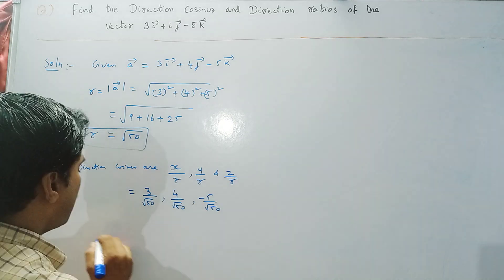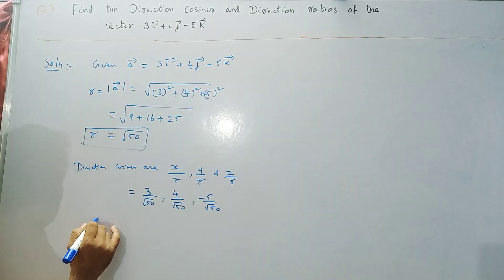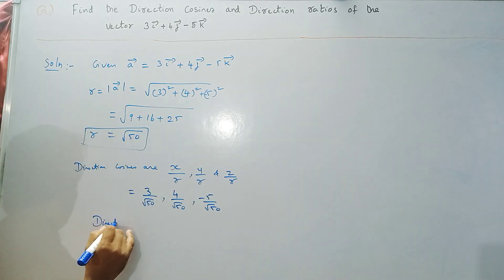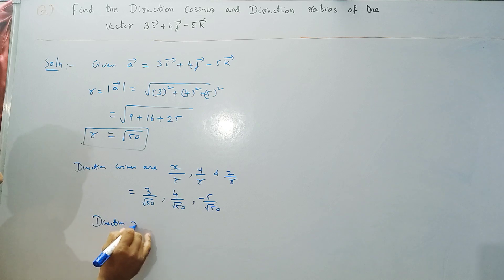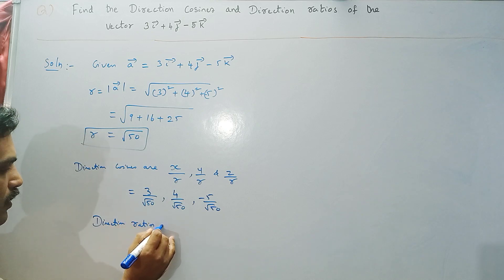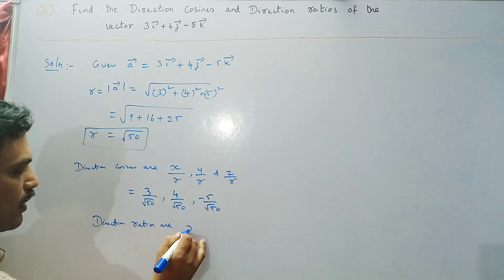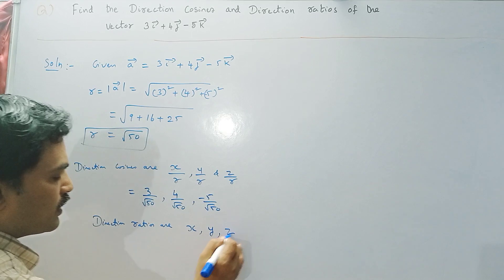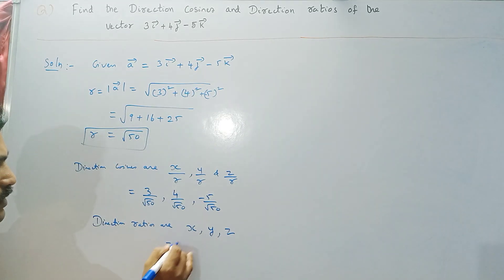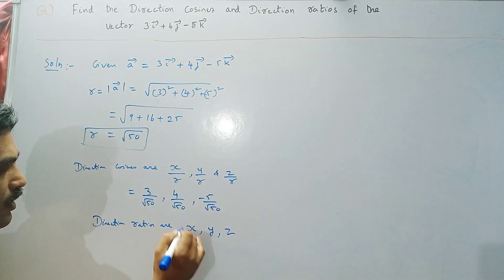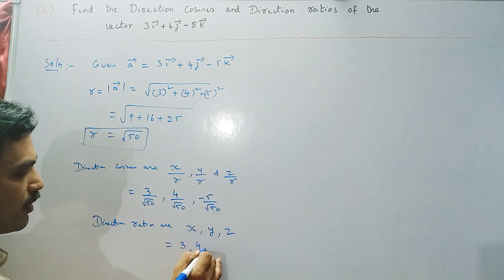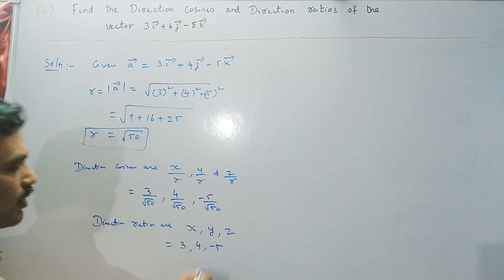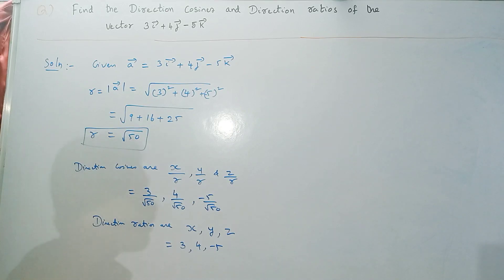And for the direction ratios: direction ratios are x, y, z — which are 3, 4, minus 5. This is how we find the direction cosines and direction ratios.